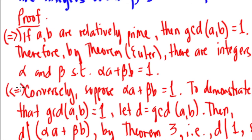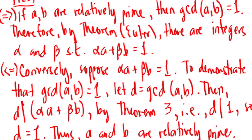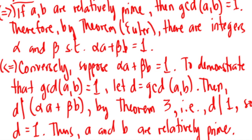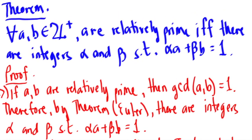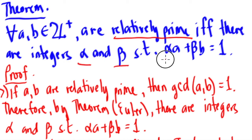Since it's an if and only if statement, both directions together complete the proof. So that's the proof for our theorem: for all positive integers A and B, they are relatively prime if and only if there are integers alpha and beta such that alpha A plus beta B equals 1. Thank you very much for watching — please like, subscribe, and see you soon.